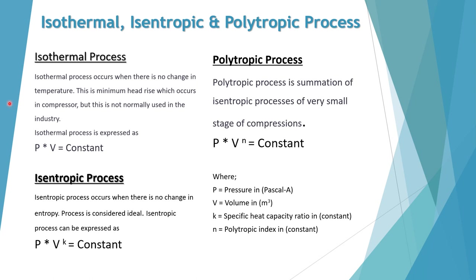Isothermal process occurs when there is no change in temperature, and this is a minimum head rise which occurs in compression. This process is not very popular in industries and not in use. We can write isothermal process as p into v is constant. Isentropic process is very much used in industry; it occurs when there is no change in entropy and is considered ideal. It is expressed as p into v to the power k equals constant, where k is cp by cv. Polytropic process is a summation of isentropic process over very small stages of compression, written as p into v to the power n is constant, where n is the polytropic index. Here p is pressure, v is volume, and k is specific heat capacity ratio.